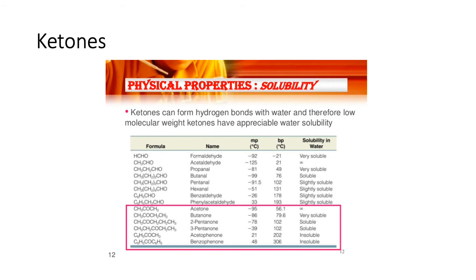Looking at the solubility chart, as ketone chain length increases, they quickly go from soluble to insoluble. Note that acetophenone is technically a ketone on a benzene ring side group — it's a bit larger, which is why there's a sudden jump from soluble to insoluble. So as ketones get longer, they get less soluble.